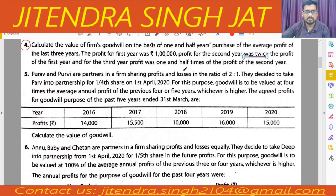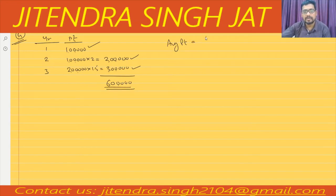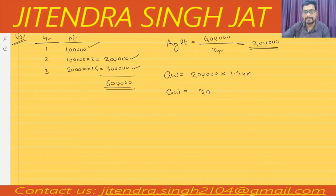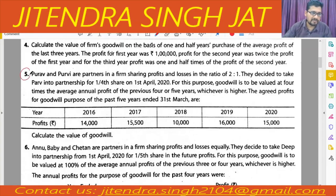We need to calculate on the basis of one and half year purchase of the average profit of three years. Total profit is 1 + 2 + 3 = 6 lakhs. Average profit equals 6 lakhs divided by 3 years, giving 2 lakhs. Goodwill equals average profit of 2 lakhs multiplied by purchase year of 1.5, giving 3 lakhs.